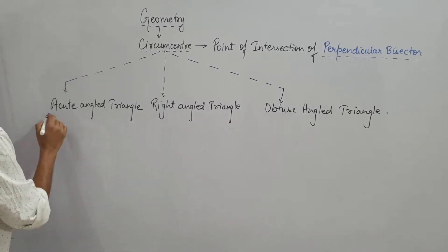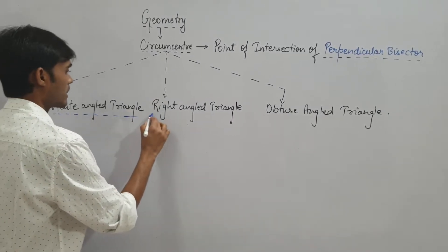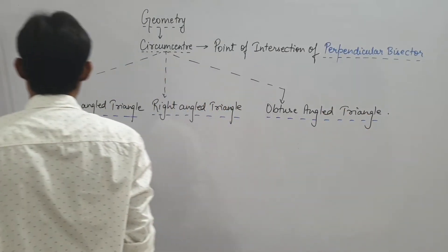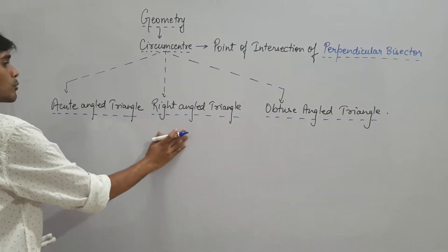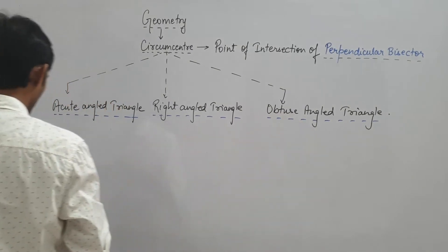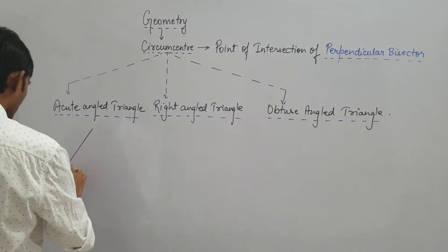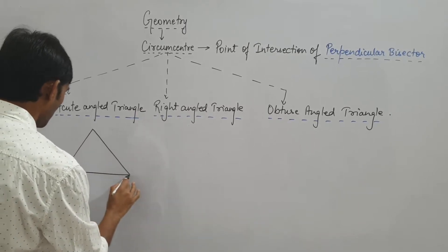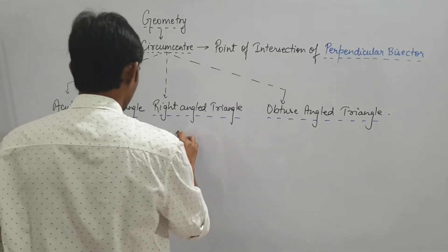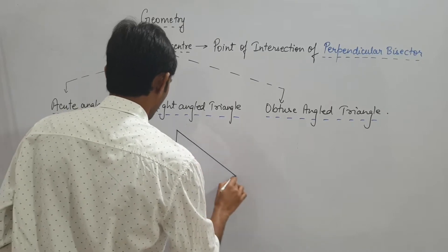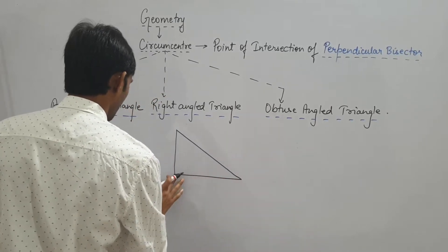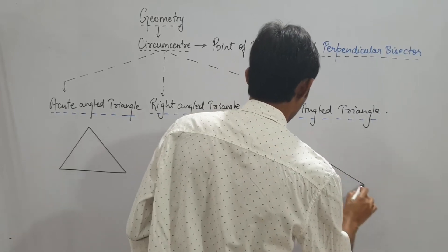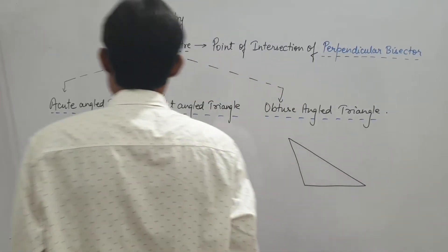We have already discussed that there are three types of triangles based on angle — acute, right, and obtuse angled. On a rough scale, if we draw a triangle, an acute angled triangle will look somewhat like this; right angled triangle will be somewhat like this; and obtuse angled triangle will be like this.